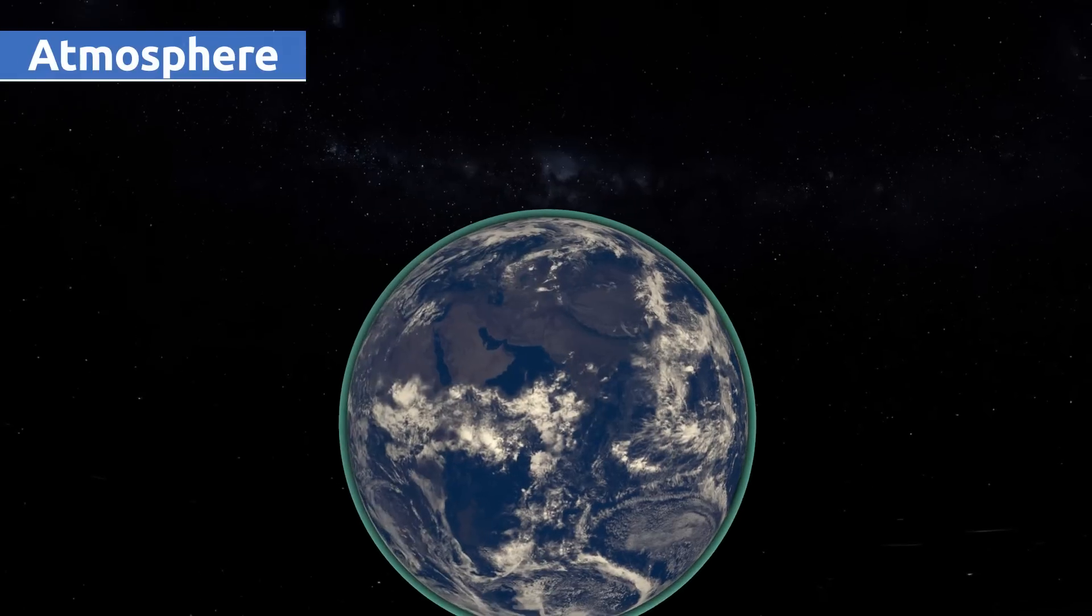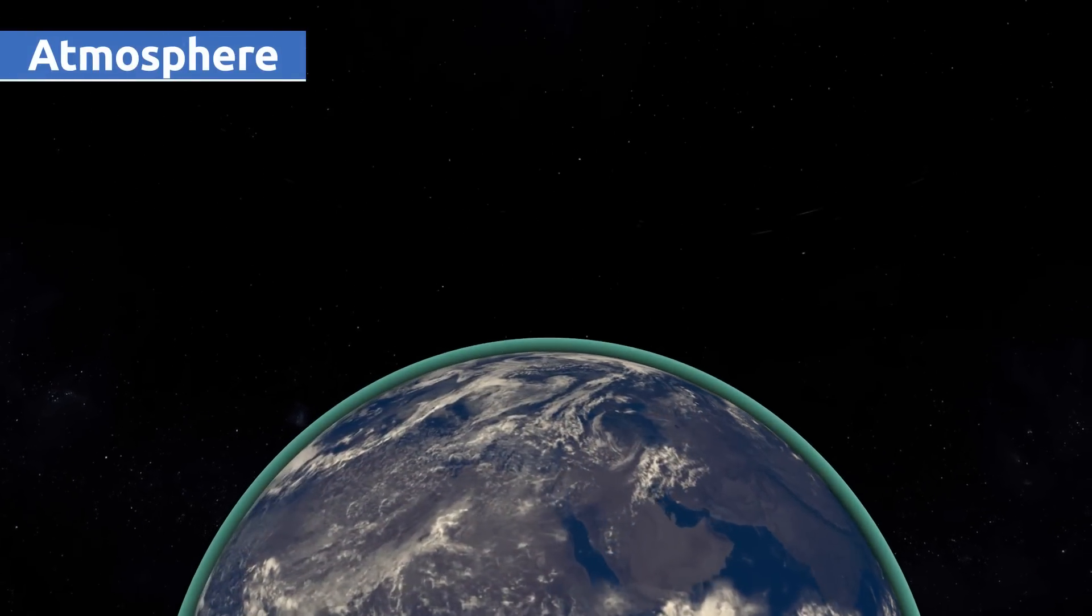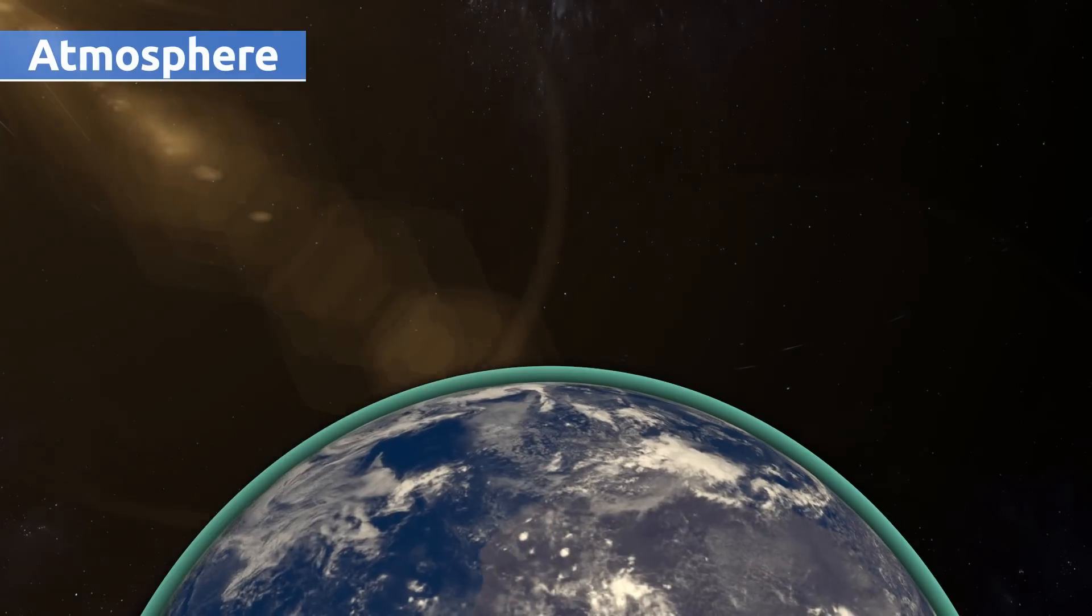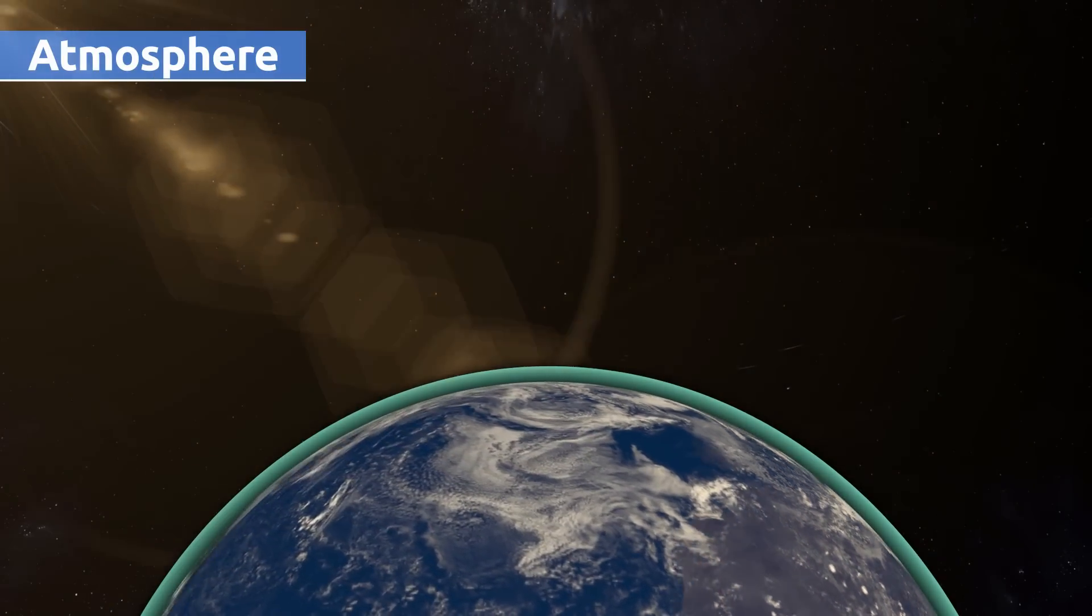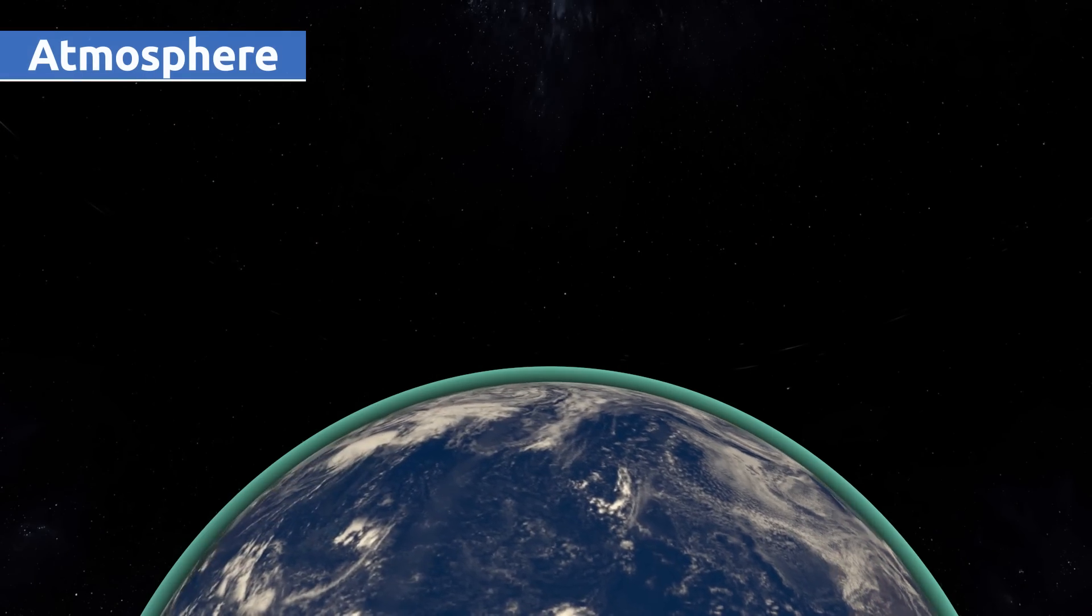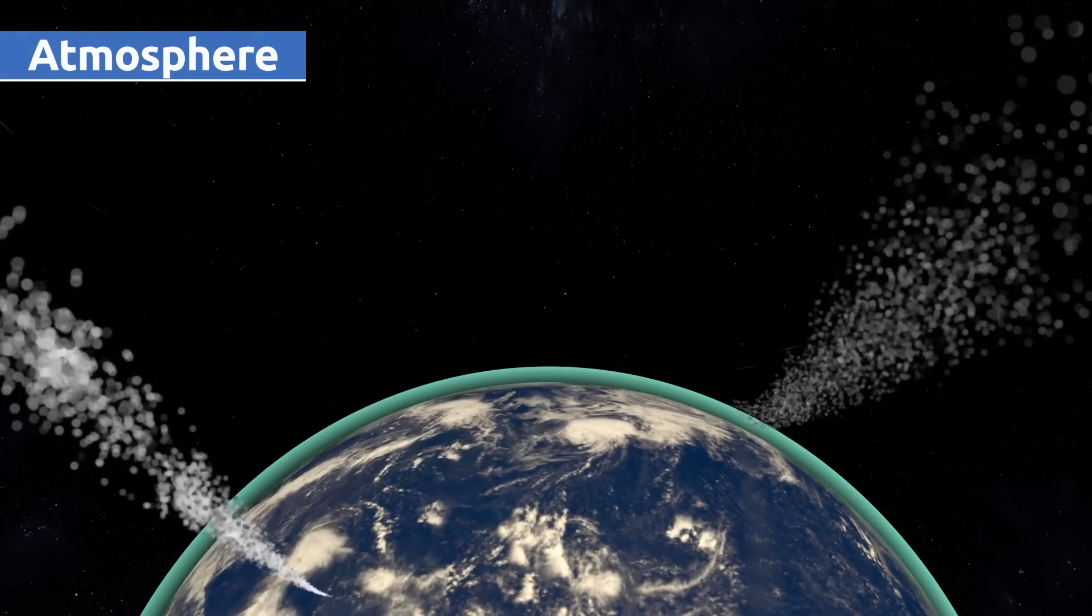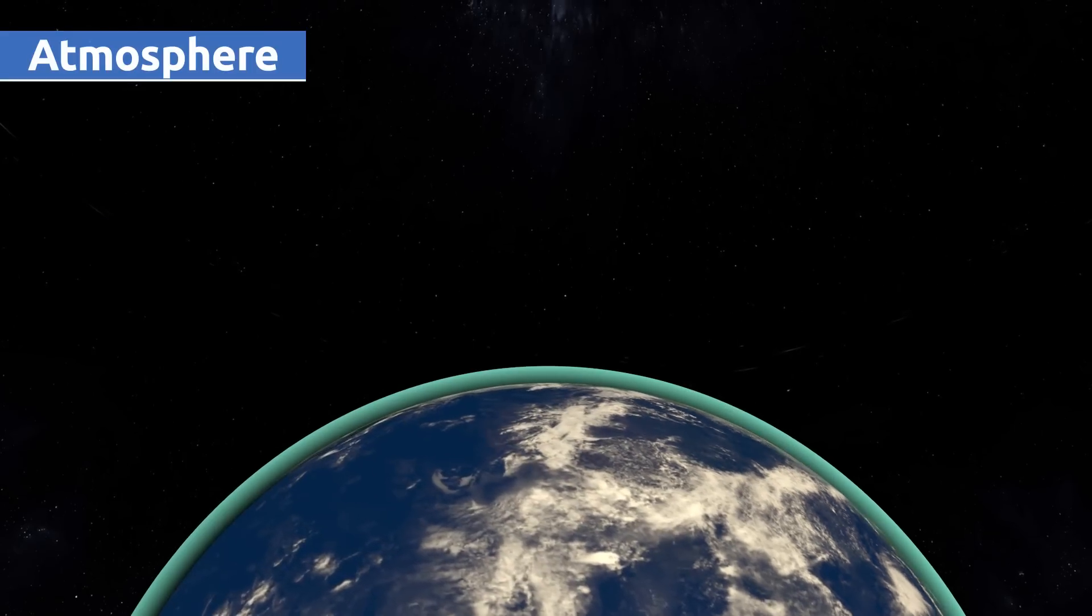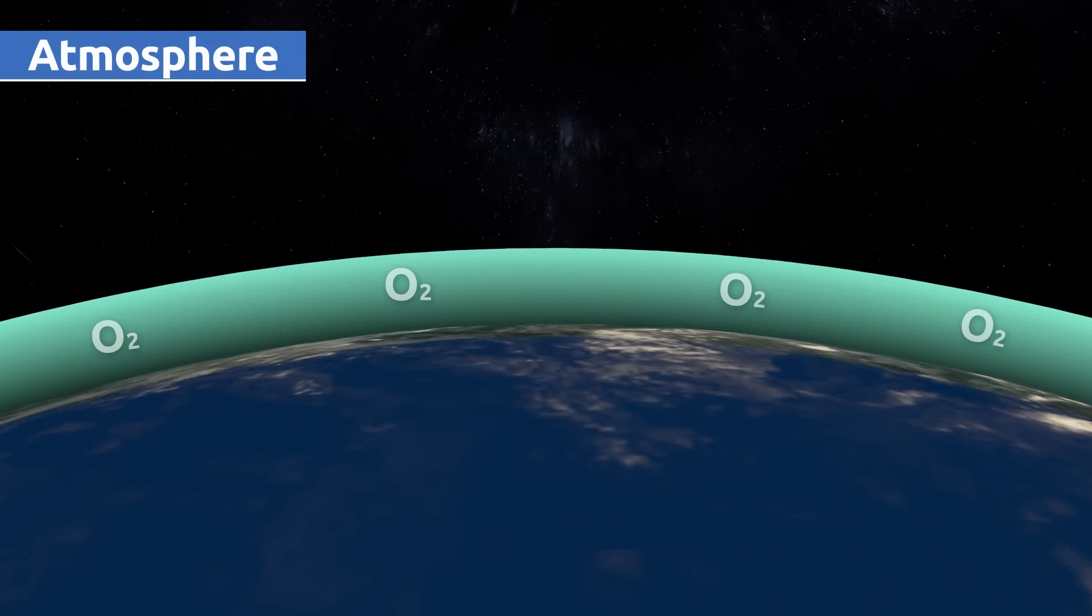The atmosphere is the outer layer that surrounds the Earth. It is formed by gases that protect the planet from outer space dangers like solar flares or small objects flying in space. Oxygen, an essential element for life, is found in this layer.